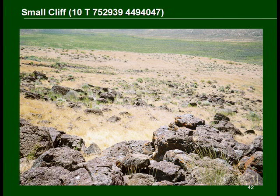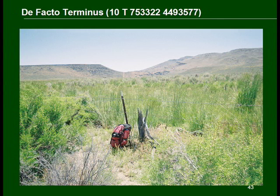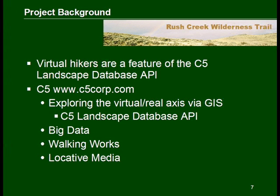A small basalt cliff — you could scramble down, but we just walked 30 meters or so around it. There are other similar cliffs in the area amidst a great deal of not much to see. The Rush Creek Wilderness Trail runs into the fence of a private ranch at this point. Although the virtual hiker trail does proceed some 775 meters further into a cattle pasture, this de facto terminus is a good place to turn around.